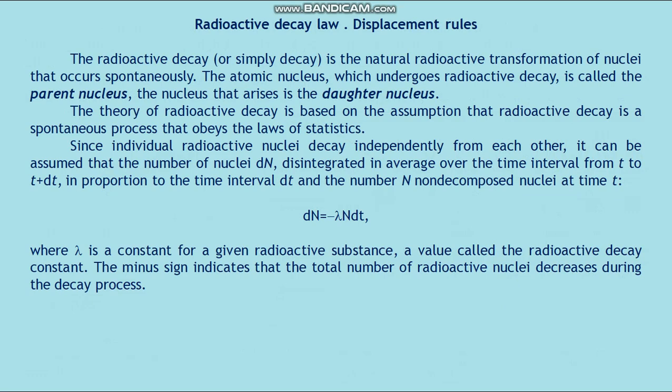The radioactive decay, or simply decay, is the natural radioactive transformation of nuclei that occurs spontaneously. The atomic nucleus which undergoes a radioactive decay is called the parent nucleus. The nucleus that arises is the daughter nucleus. The theory of radioactive decay is based on the assumption that radioactive decay is a spontaneous process that obeys the laws of statistics. Since individual radioactive nuclei decay independently from each other, it can be assumed that the number of nuclei dN disintegrated on average over the time interval from t to t+dt